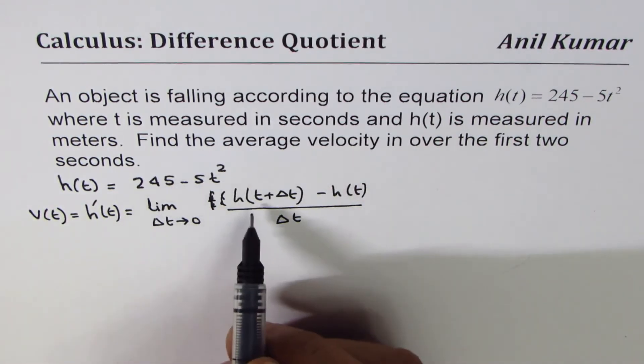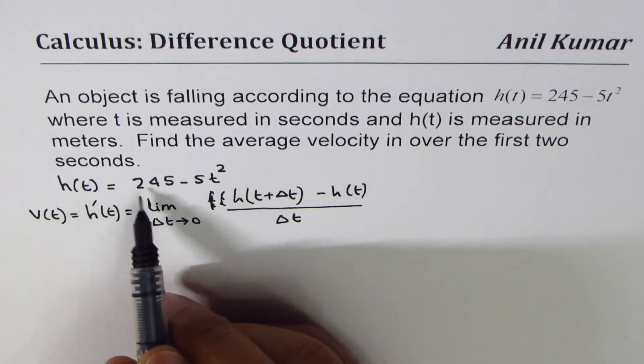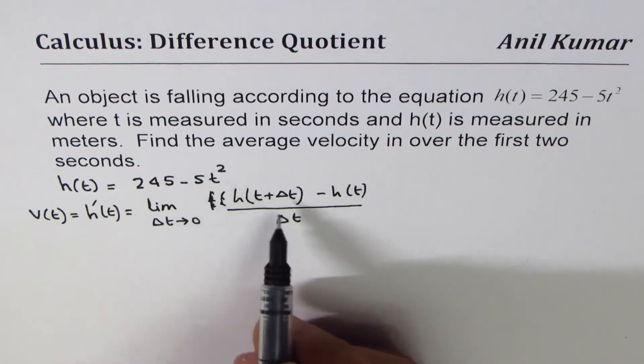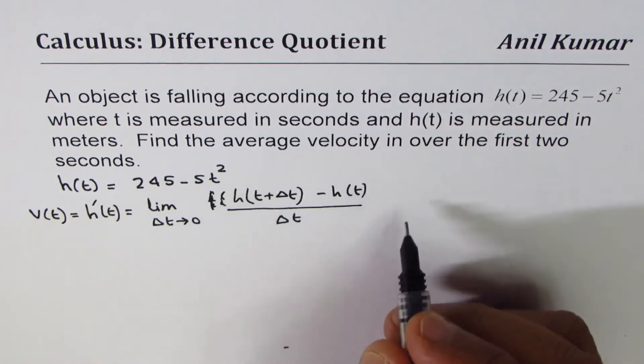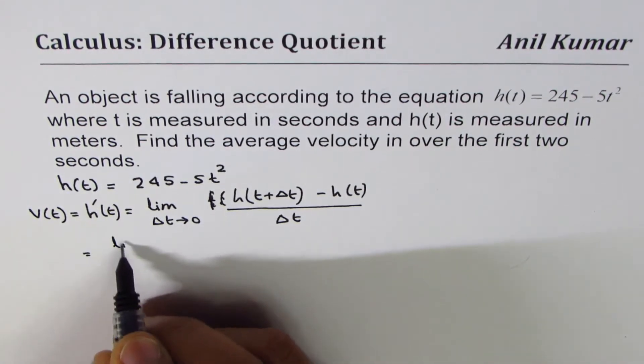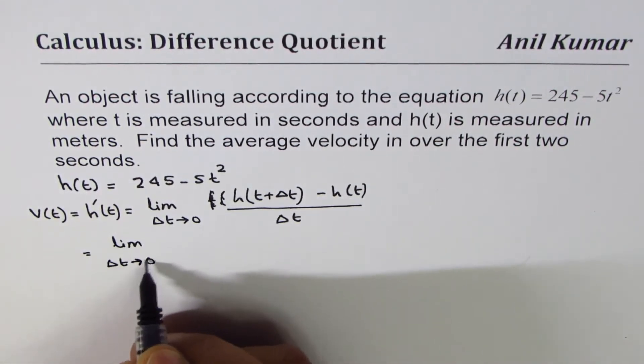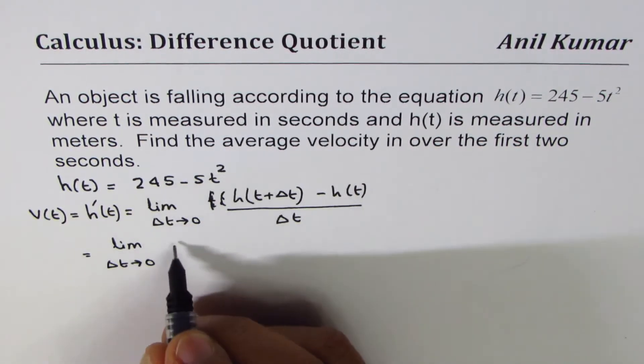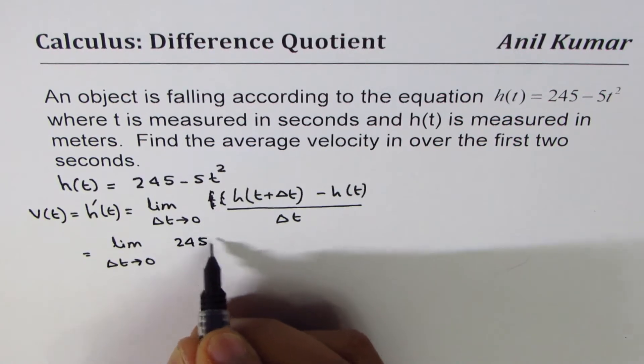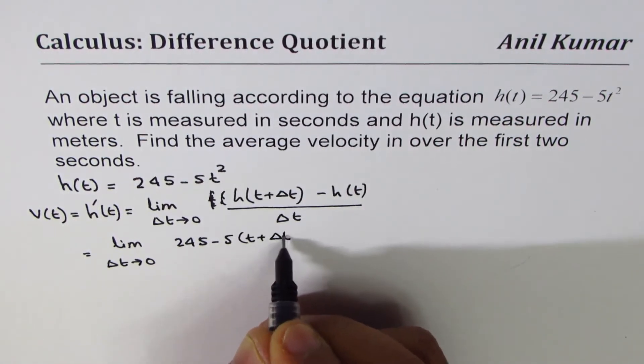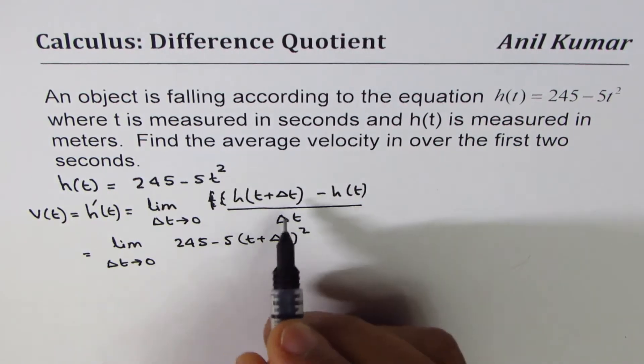Now, in our case, h(t) is 245 - 5t². So we'll replace t with t + Δt. So the expression will be: limit Δt approaches 0, h(t + Δt) will be 245 - 5(t + Δt)².